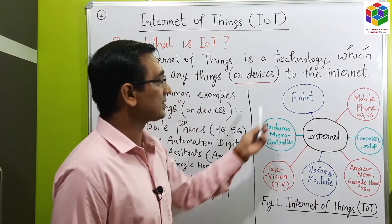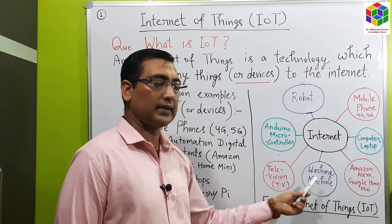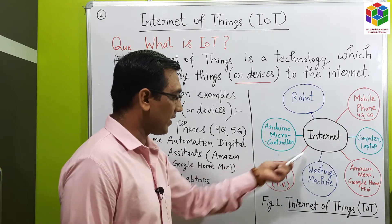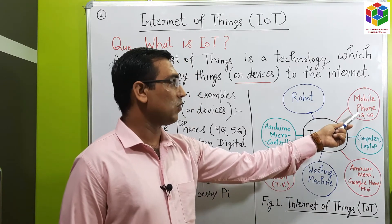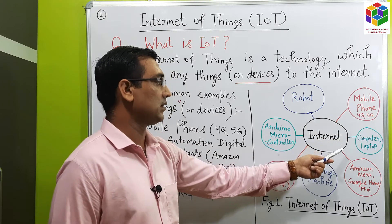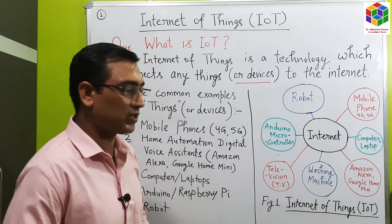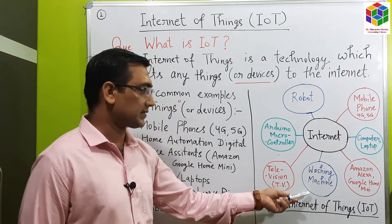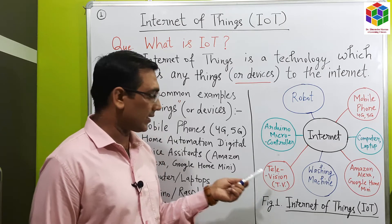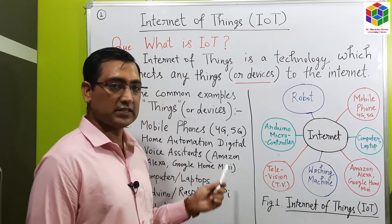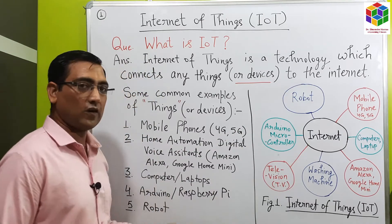Now we will see this diagram, which illustrates the concept of Internet of Things. Here, at the center, the internet is located and the internet is connected to various devices — the Things. Number one, mobile phone, that is 4G or 5G technology based. Computer or laptop. Amazon Alexa, Google Home Mini. Washing machine — domestic appliances controlled by Amazon Alexa or Google Home Mini. Television, also controlled by these digital voice assistants. Arduino microcontroller. Robots. So these are the examples of Internet of Things.